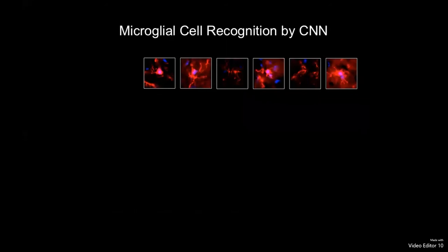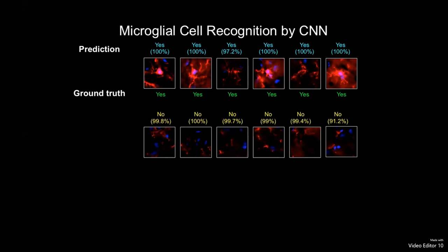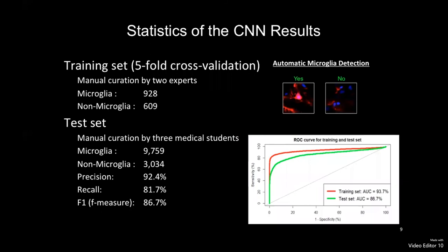Our results show that the CNN can make a prediction of the boxes that have microglia cells. As you can see, the prediction is 100% accurate for cells in this image, which matches the ground truth answers. The same applies to the negative boxes with no microglia cells. There were also a few guesses that did not match the ground truth, as you can see in the last row of these images.